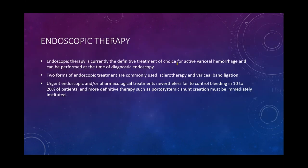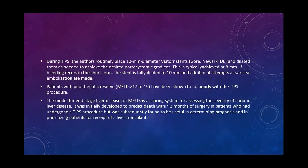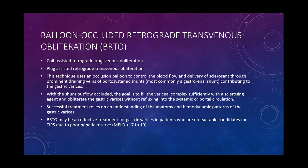When endoscopy fails for variceal bleeding, portal systemic shunt creation may be necessary. Here we see varices originating off the portal vein, followed by creation of a portal systemic shunt, with flow preferentially diverted into that shunt. The goal is a portal systemic gradient less than 12, which is associated with lower re-bleeding risk. We can also perform balloon-occluded retrograde transvenous obliteration (BRTO), coil-assisted retrograde transvenous obliteration (CARTO), or plug-assisted retrograde transvenous obliteration to block off varices.